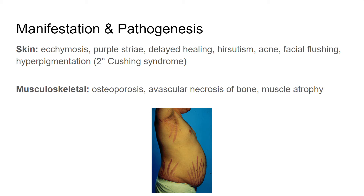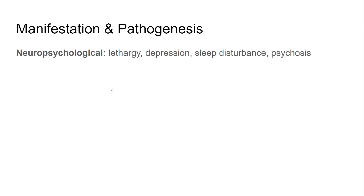Next are the musculoskeletal manifestations. We can see osteoporosis and avascular necrosis of the bone, as well as muscle atrophy. Osteoporosis occurs because cortisol inhibits osteoblast action and increases osteoclast activity, leading to increased bone resorption. Muscle atrophy occurs because cortisol has a catabolic effect on protein metabolism, breaking down protein into amino acids — and since muscles contain a lot of protein, we see muscle breakdown. There are also neuropsychological symptoms such as lethargy, depression, sleep disturbances, and psychosis, though the exact pathogenesis for these is not yet fully understood.